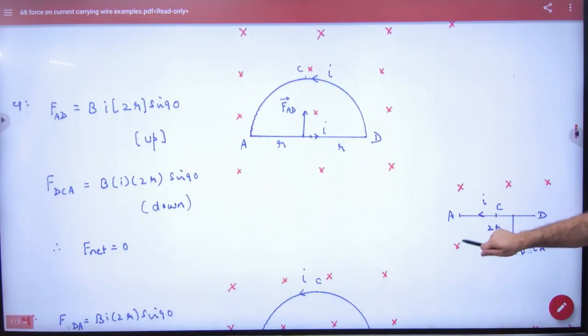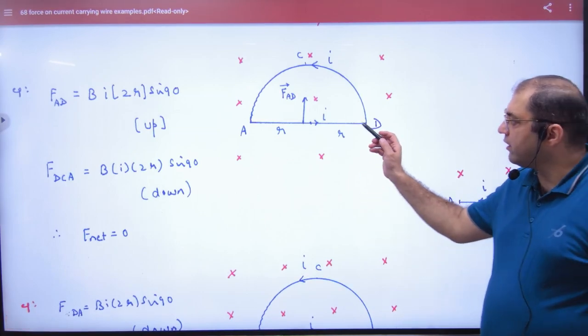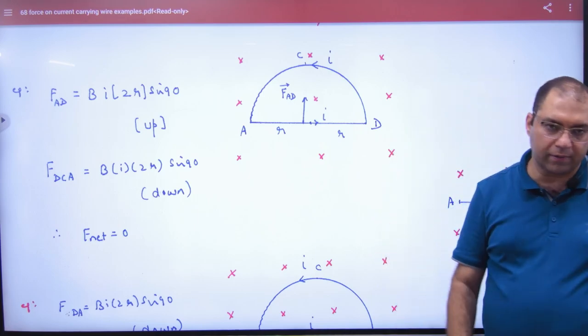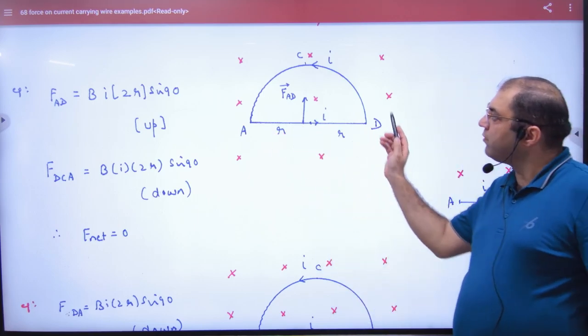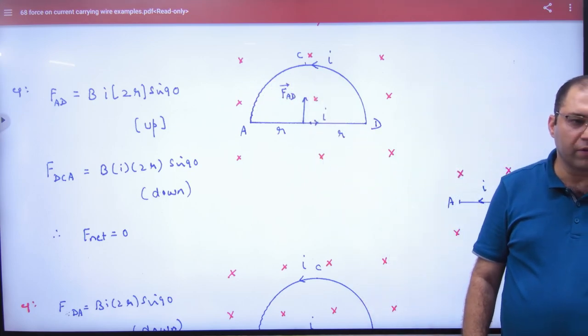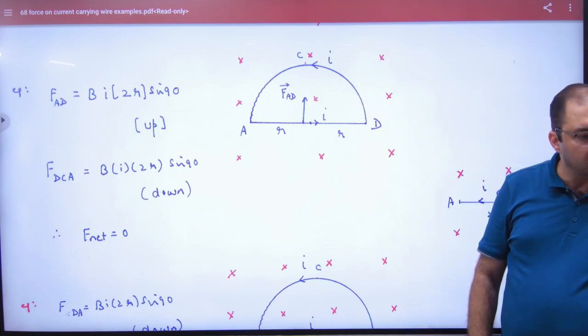So this is the question. What is given to you? From A to D, there is I current. Then the current is moving through the loop. First question: find net force on loop. What is the answer? Zero.